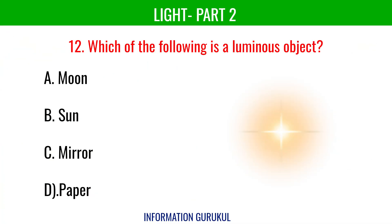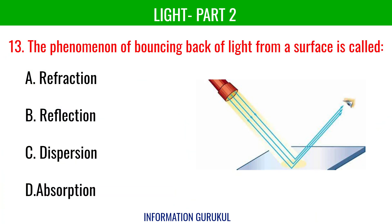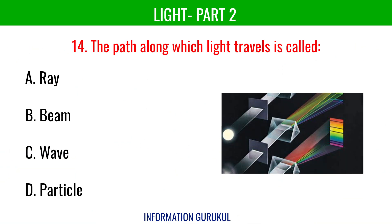Which of the following is a luminous object? Sun. The phenomenon of bouncing back of light from a surface is called reflection. The path along which light travels is called a ray.